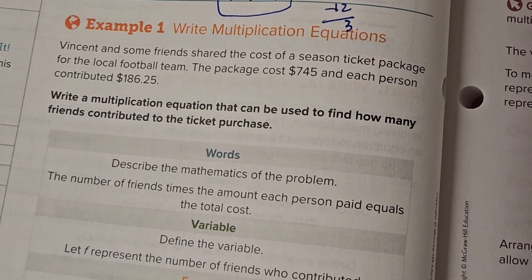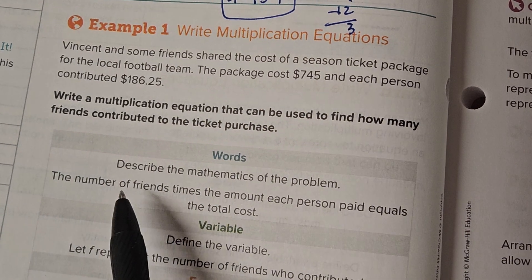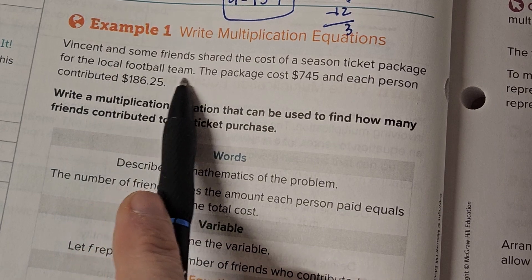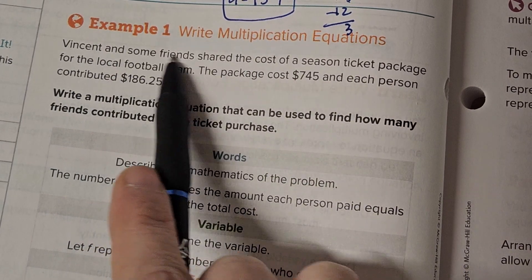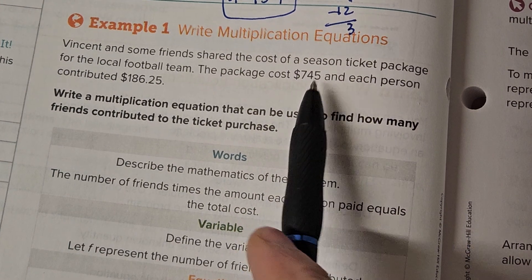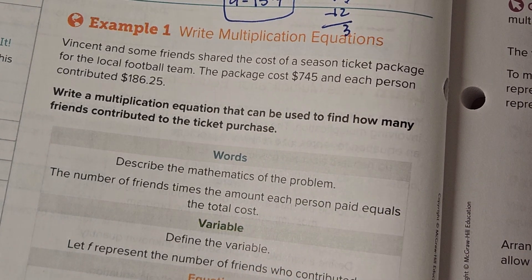All right, next example, number one. Vincent and some friends shared the cost of a season ticket package for the local football team. So shared a cost. The package cost $745, so the total is $745.